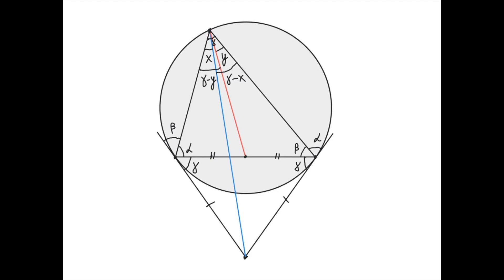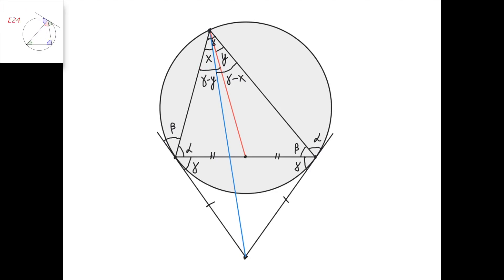Since this angle is x, this angle here is gamma minus x, and since this angle is y, this angle here is gamma minus y. From the alternate segment theorem, we know that this angle is gamma, this angle is alpha, this angle is gamma, and this angle is beta.